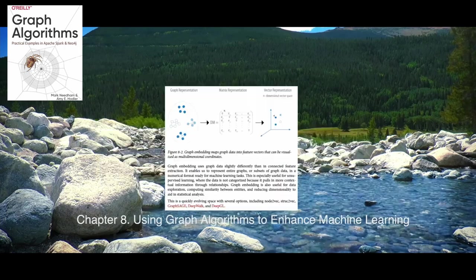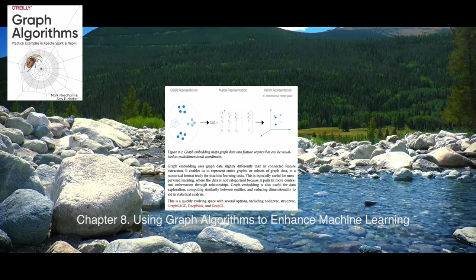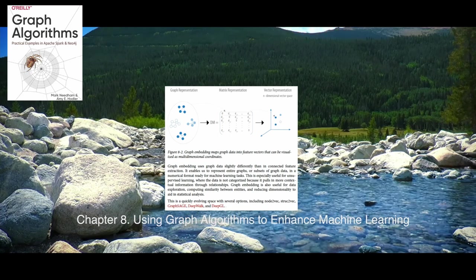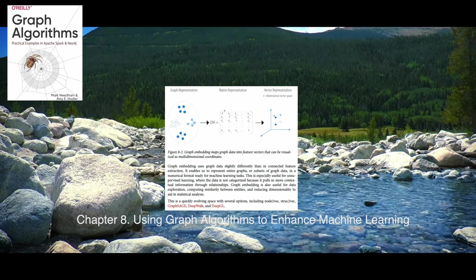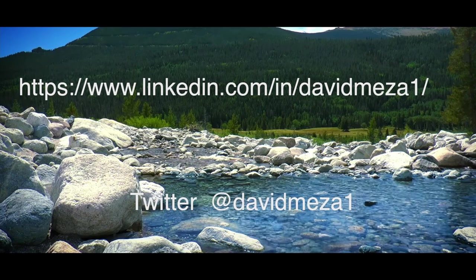Chapter 8 uses graph algorithms to enhance machine learning. It's really the next step or the next evolution of graph data science — how we're moving forward and how we're actually using graph embeddings within graph databases to take that information and pass it on to neural nets. Those last two sections dig a little deeper, give you a taste of what the possibility is, and give you an excitement to continue to learn and go forward.